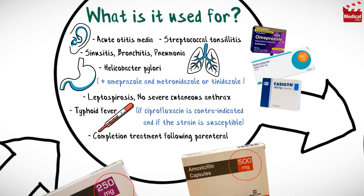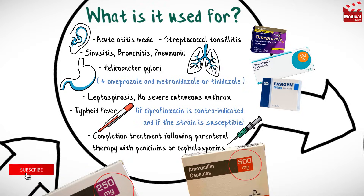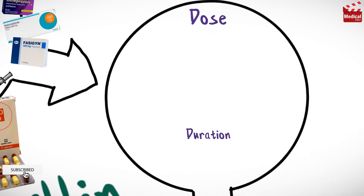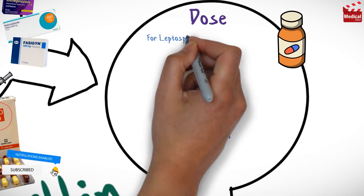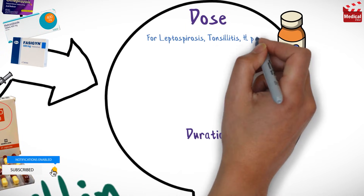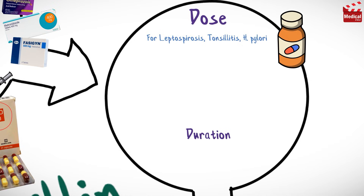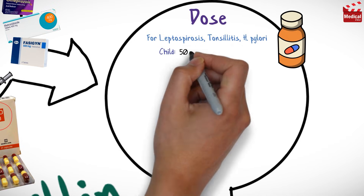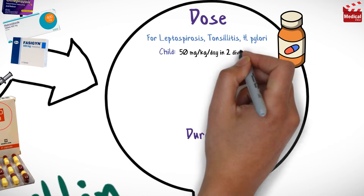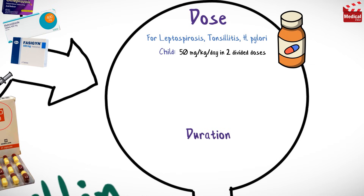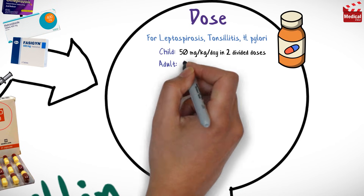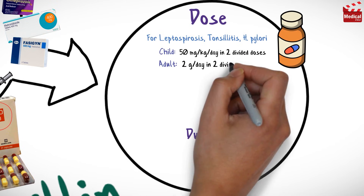Amoxicillin is also used as completion treatment following parenteral therapy with penicillins or cephalosporins. The usual dosage for leptospirosis, tonsillitis, and infection due to Helicobacter pylori: for children, 50 mg/kg/day in two divided doses; for adults, two grams per day in two divided doses.